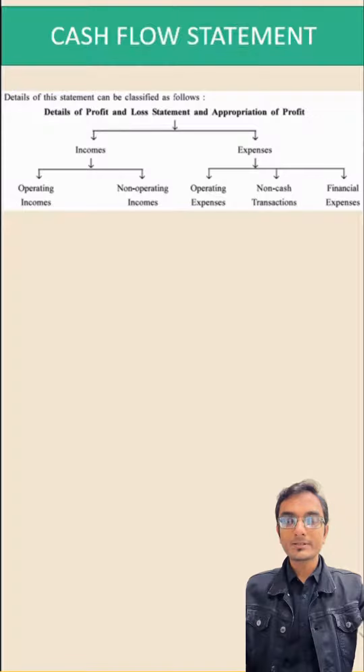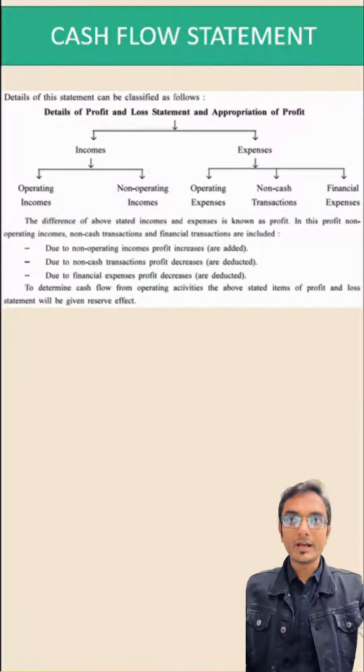The difference of all stated items is called profit, and in this profit non-operating incomes, non-cash transactions, and financial transactions are included. Due to non-operating income, profit increases which are already added into the profit. Due to non-cash transactions, profit decreases which are deducted from the total profit. Due to financial expenses, profit decreases because that is also deducted from the amount of profit.